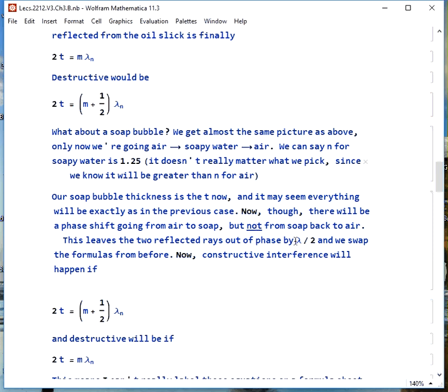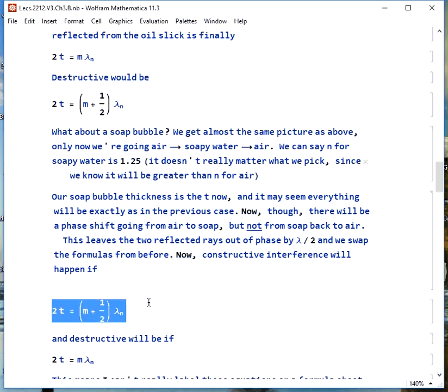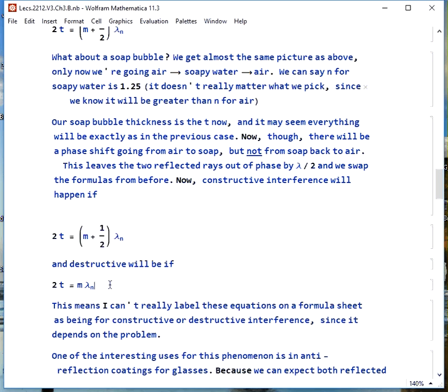That means the two rays are already out of phase by lambda over 2 and if we want constructive interference we have to put them back in phase which means now we're using this formula which is what we said was the formula for destructive interference in the previous case. Now it's constructive and likewise our formula for destructive interference is what was constructive in the previous case.